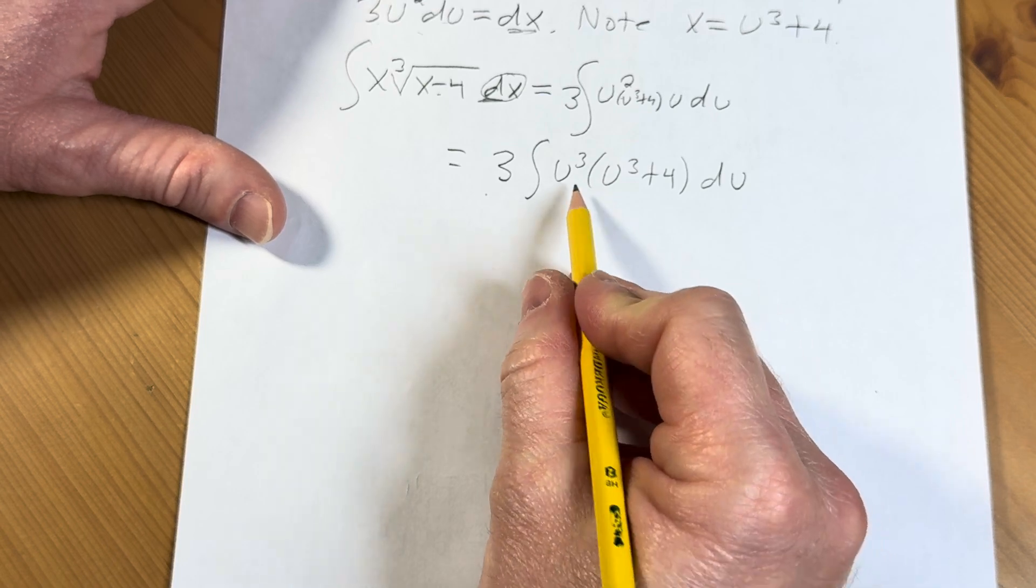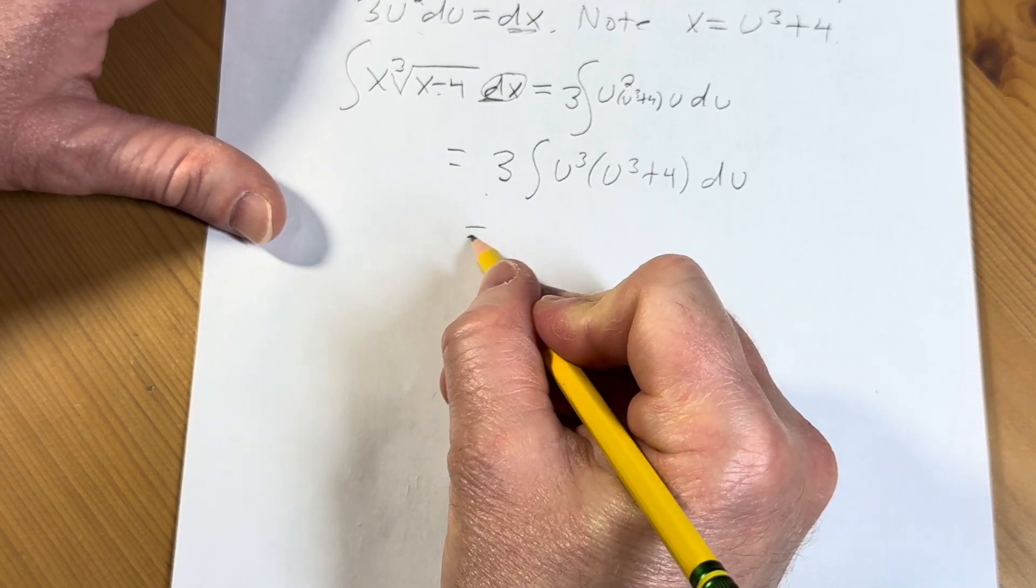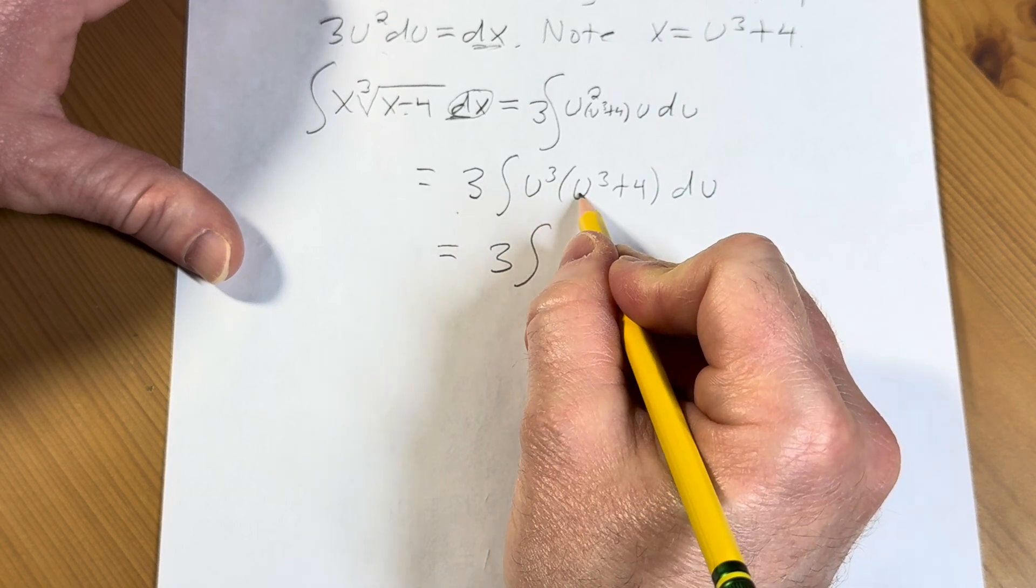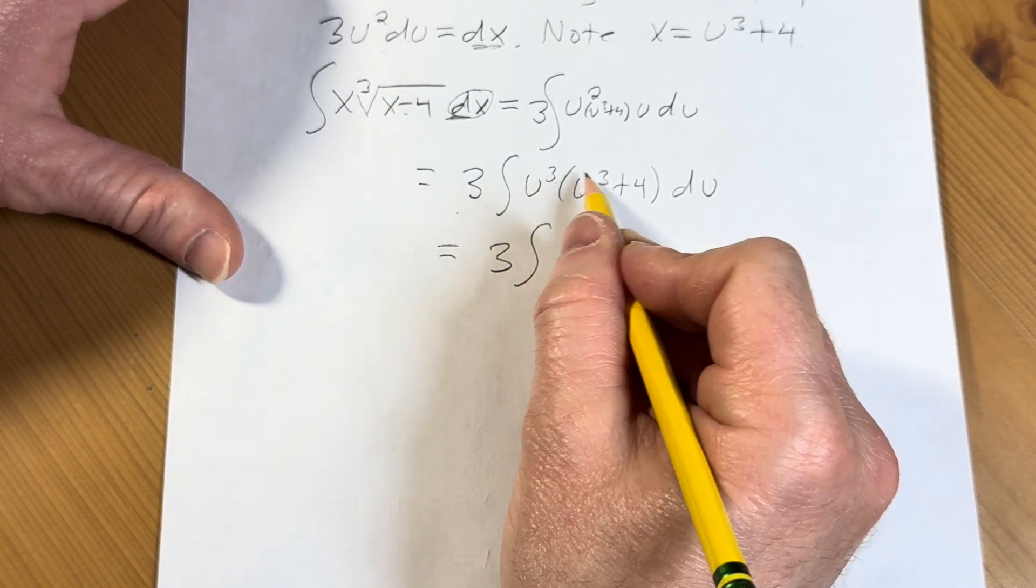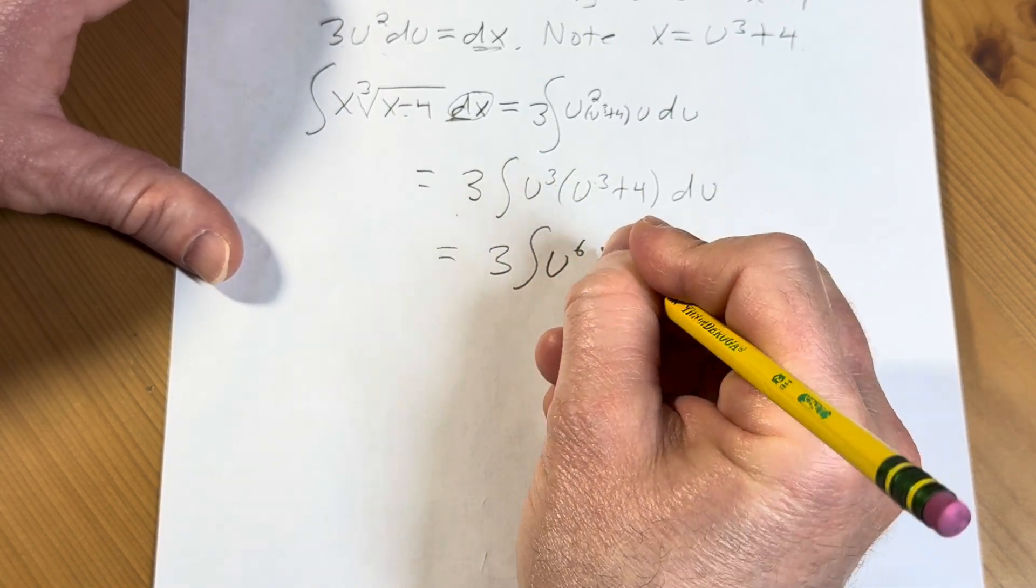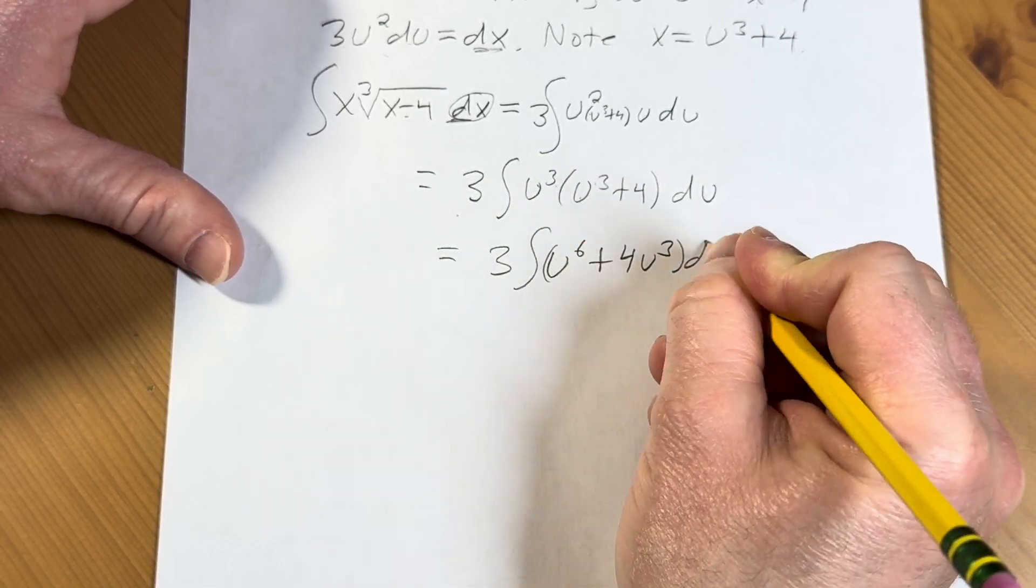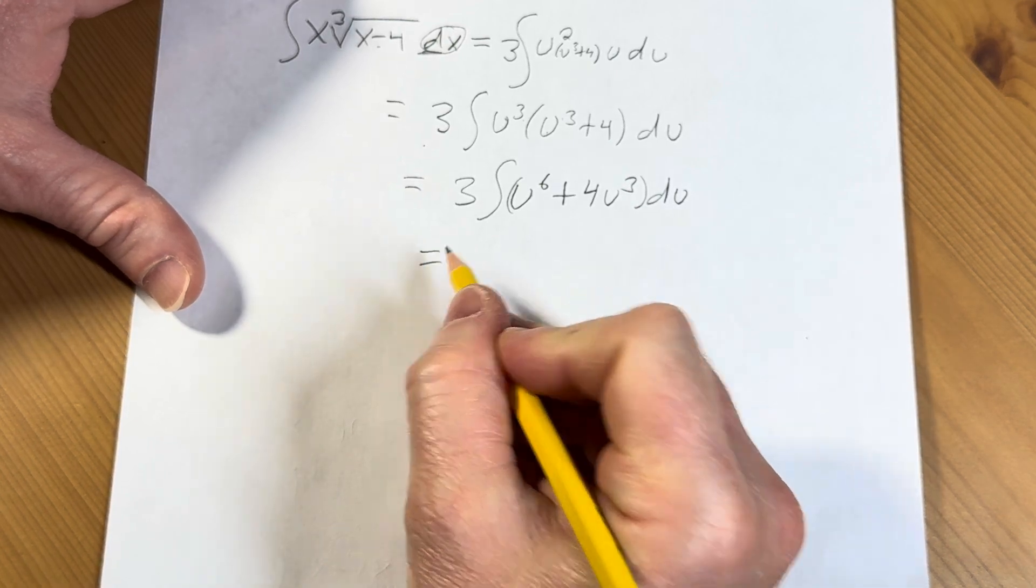Continuing in this fashion, let's go ahead and distribute that u cubed. So this is equal to 3 times the integral of u cubed times u cubed, we're going to add the exponents. So 3 plus 3 is 6. Plus u cubed times 4 is 4u cubed. And then we have parentheses and our du.